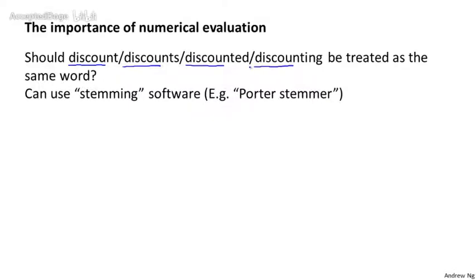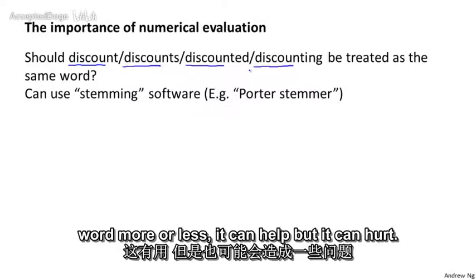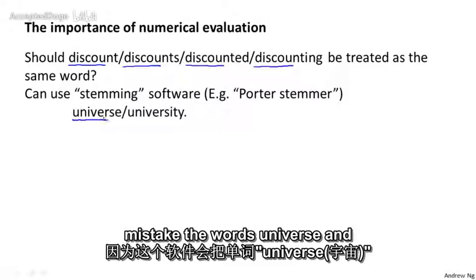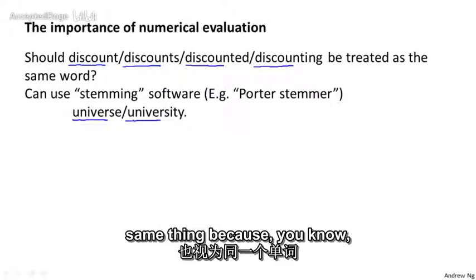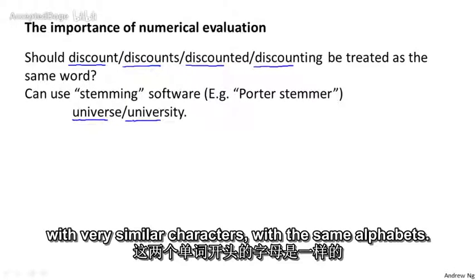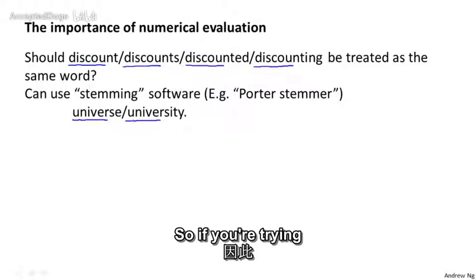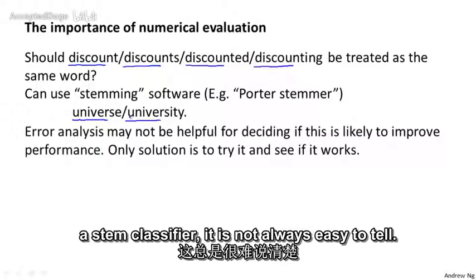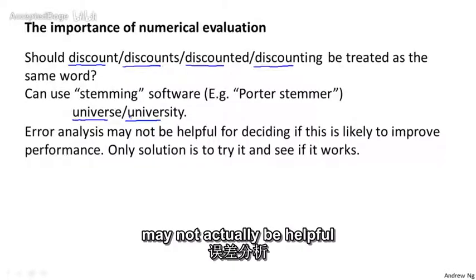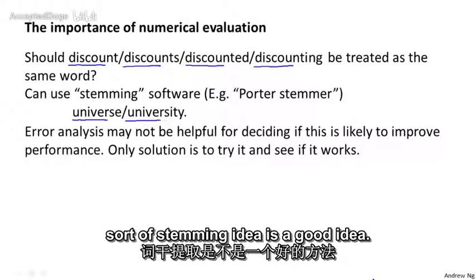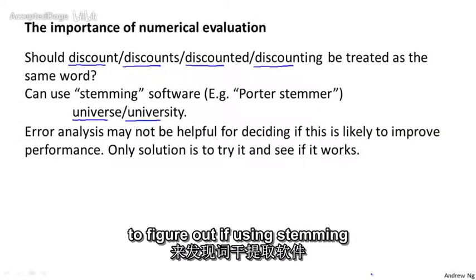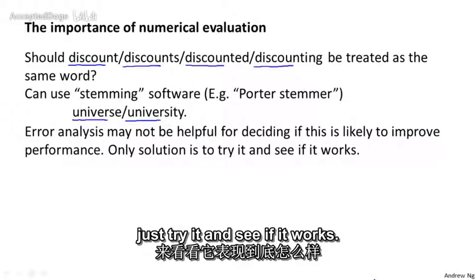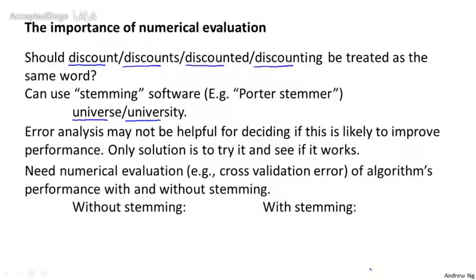But using a stemming software that basically looks at the first few alphabets of a word, more or less, it can help, but it can hurt. And it can hurt because, for example, the software may mistake the words universe and university as being the same thing, because these two words start off with very similar characters with the same alphabets. So if you're trying to decide whether or not to use stemming software for a spam classifier, it's not always easy to tell. And in particular, error analysis may not actually be helpful for deciding if this sort of stemming idea is a good idea. Instead, the best way to figure out if using stemming software is going to help your classifier is if you have a way to very quickly just try it and see if it works.